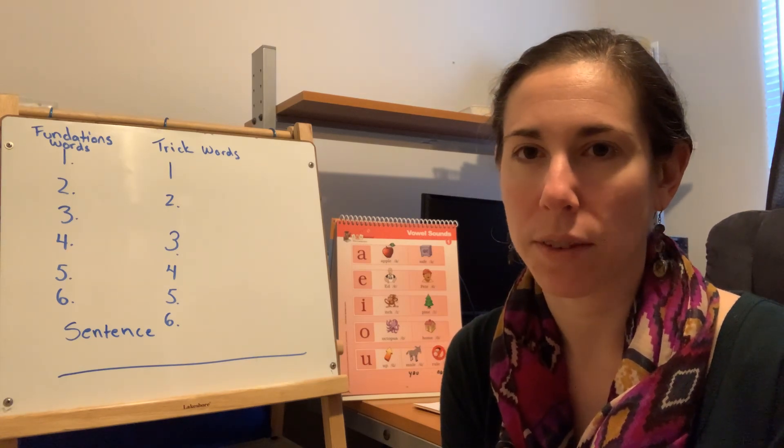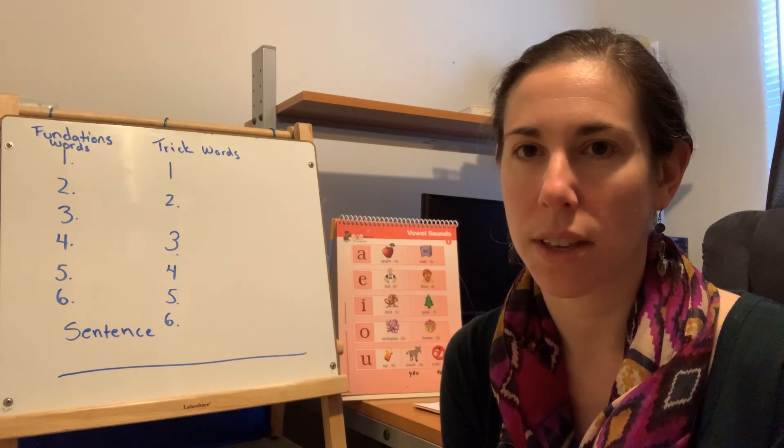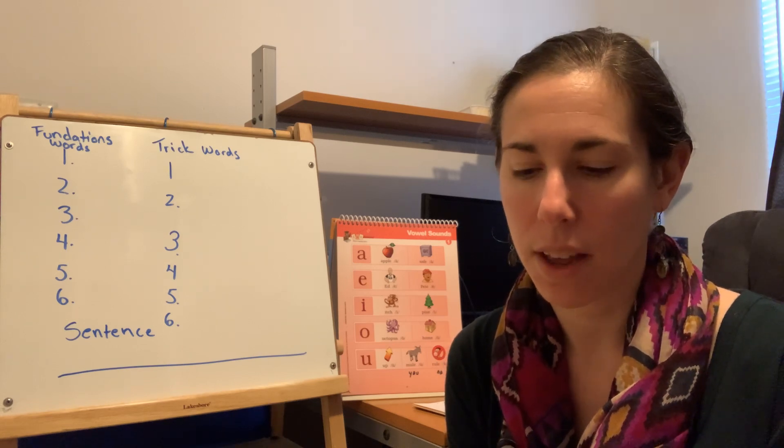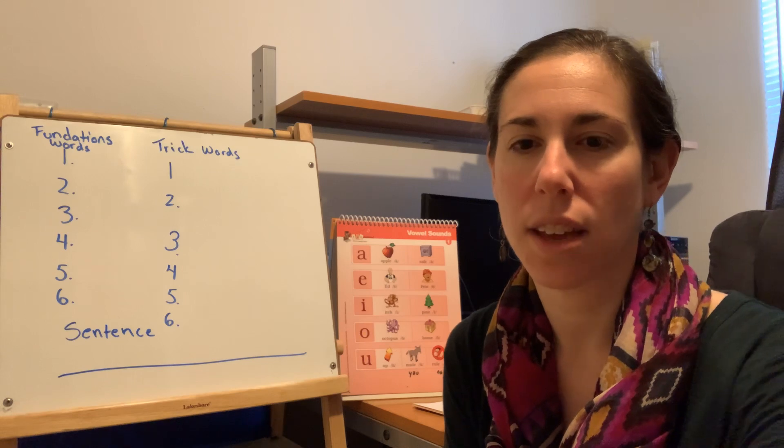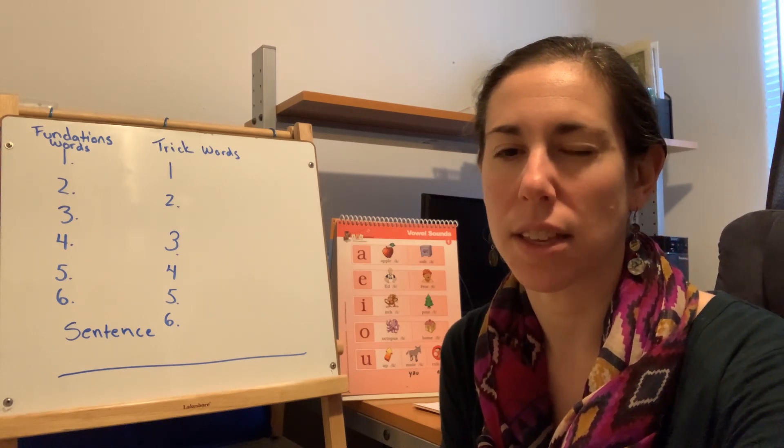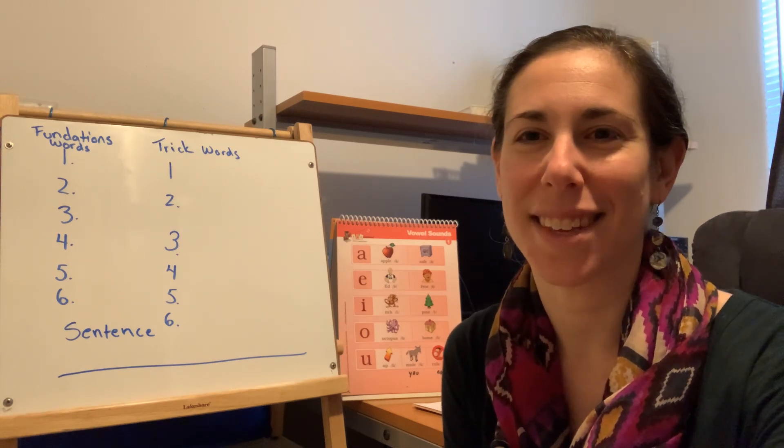Number one was friend. Number two is other. Number three is another. Number four is just. Number five is make. And number six is before.